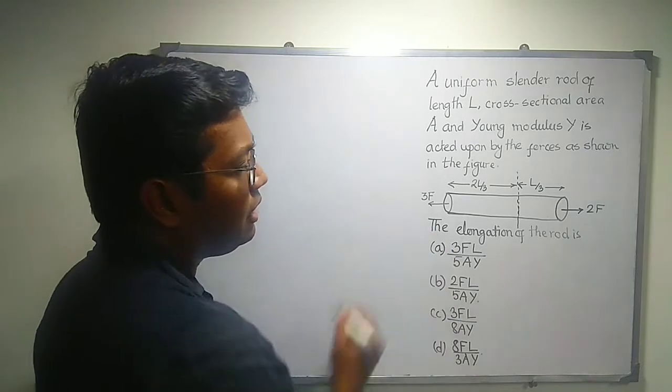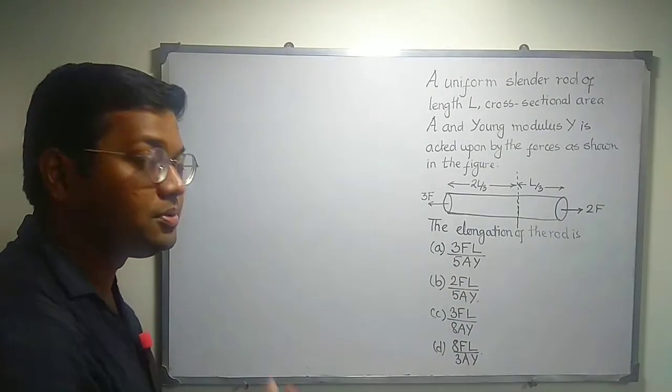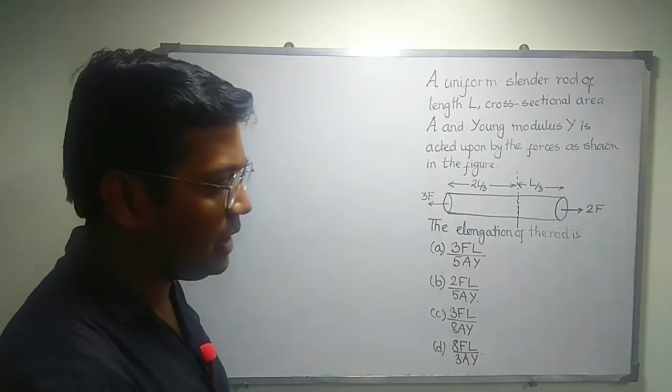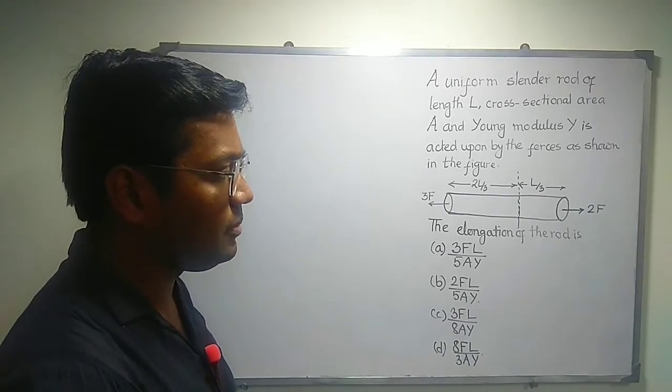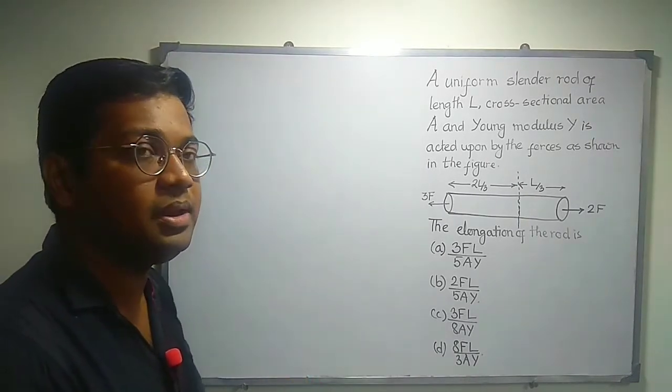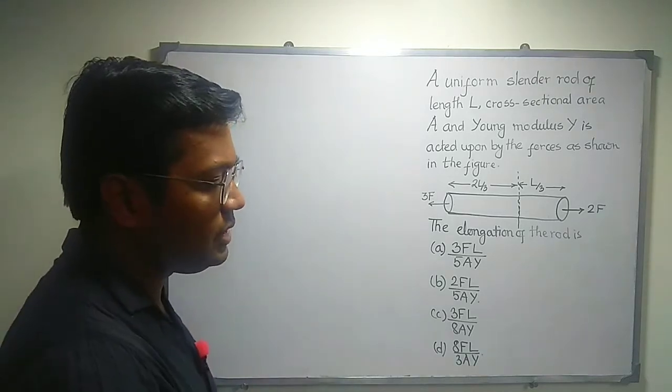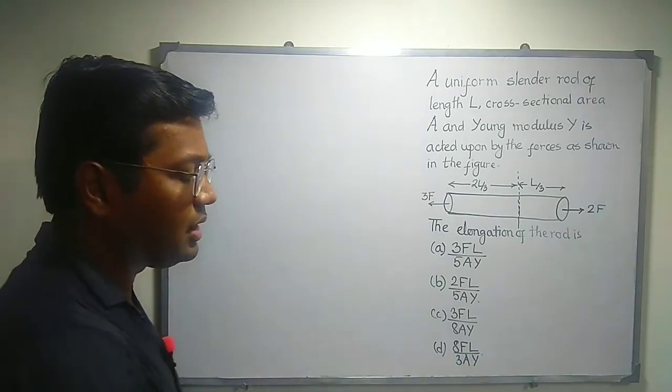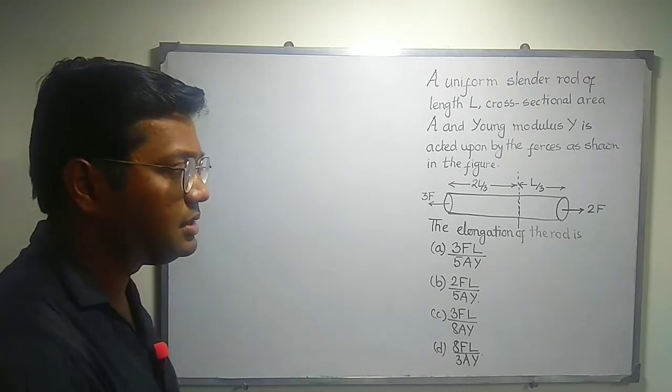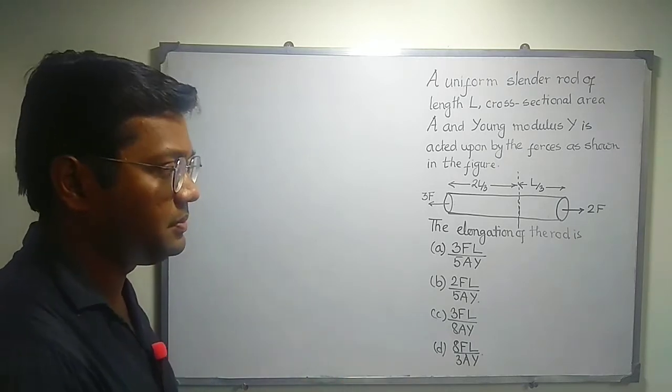Okay. The elongation of the rod is? Four options are given obviously. Option A: 3FL by 5AY. Option B: 2FL by 5AY. Option C: 3FL divided by 8AY. And option D is 8FL divided by 3AY.